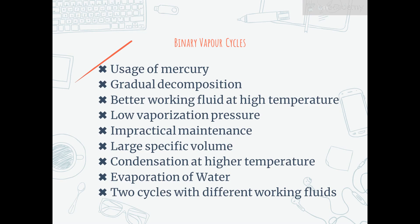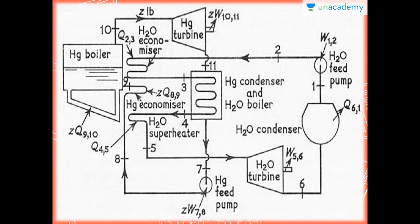Its specific volume at such a low pressure is very large and it will be difficult to accommodate such a large volume flow. Thus, for these reasons, to take advantage of the beneficial features of mercury in the high temperature range and to get rid of its deleterious effects, we use mercury at the low temperature range and the mercury vapor leaving the mercury turbine is condensed at a high temperature and high pressure. In the binary or two-fluid cycles, two cycles working with two different working fluids are coupled in series and the heat rejected by one is being utilized by the other. You can see here the flow diagram of the mercury-steam binary cycle, showing the Hg turbine, the Hg boiler, the superheater, and the economizer.